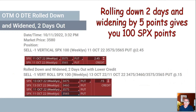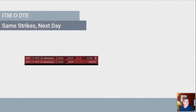Rolling down two days and widening the position by five points gives you 100 SPX points of distance. If you would have widened 10 or 15 points it would have gone down more, but again you have a diminishing return when widening these positions.